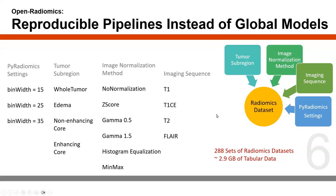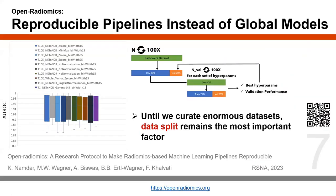The combination of all these different settings gave us 288 sets of radiomics datasets, corresponding to almost three gigabytes of tabular data — one of a kind. We realized that until we curate enormous datasets, data split remains the most important factor of randomness in AI-based pipelines for radiomics analysis. As you can see, in 10 different settings we could achieve a perfect area under the ROC curve as high as 1, but that result was very irreproducible — it was truly by chance that we found a golden data split on which the model performed perfectly.